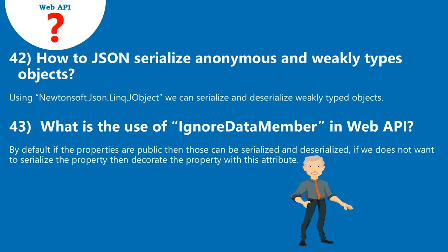Question 42: How to JSON serialize anonymous and weakly typed objects? Using Newtonsoft.Json.Linq.JObject, we can serialize and deserialize weakly typed objects.